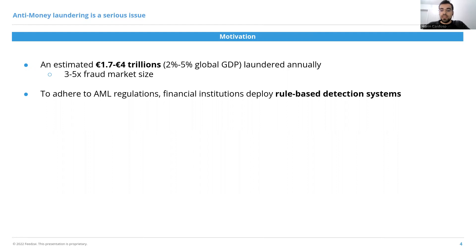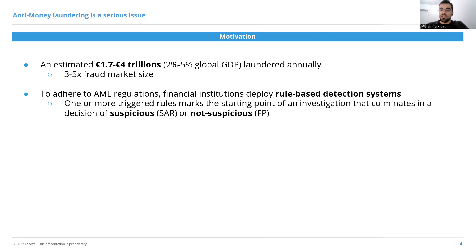They do this typically by deploying a rule-based detection system that defines a set of rules aligned with AML regulations. Once a rule is triggered, this is the starting point of an investigation procedure carried out by a human analyst that eventually culminates in a decision of either suspicious — at which point a suspicious activity report (SAR) must be filed — or not suspicious, at which point the alert was a false positive.